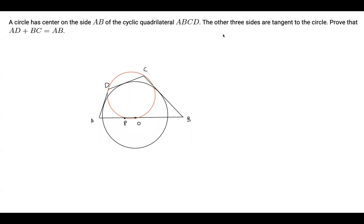Hello everybody. Today we will be solving problem one of the 1985 IMO. The problem reads: a circle has center on side AB of the cyclic quadrilateral ABCD. The other three sides are tangent to the circle. Prove that AD plus BC equals AB.